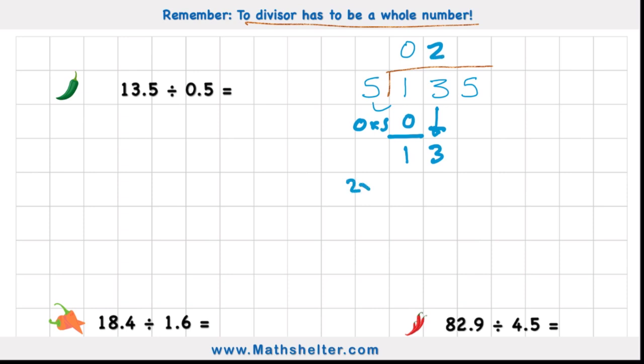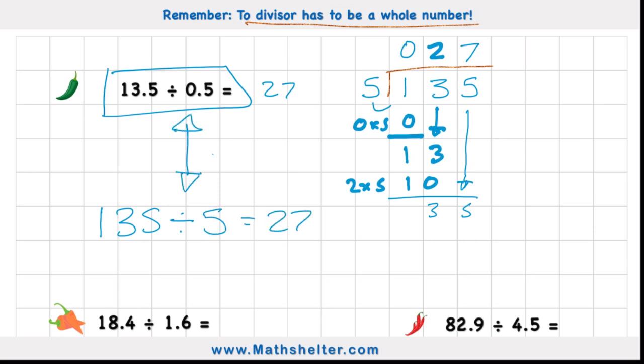13 divided by 5 is 2. But now when I have my 2 multiplied by 5, I have 10. Therefore, 13 subtract 10 leaves me with 3. Drag down my next number, which is a 5. How many fives are there in 35? We have 7. So my answer to 13.5 divided by 0.5 is 27. Because the answer to 135 divided by 5 is also 27. And these two questions are equivalent.